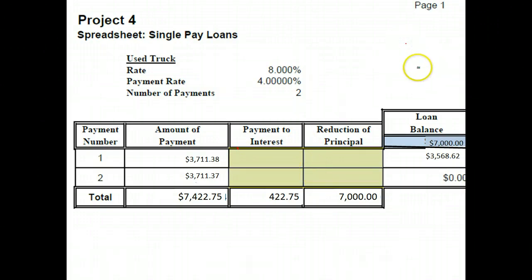Now on this loan that I have as my example, the original balance of the loan is $7,000. It has an 8% interest, but they're allowing you two payments on this, so they've split the payment rate in two, and our payment rate is going to be 4% for each payment.